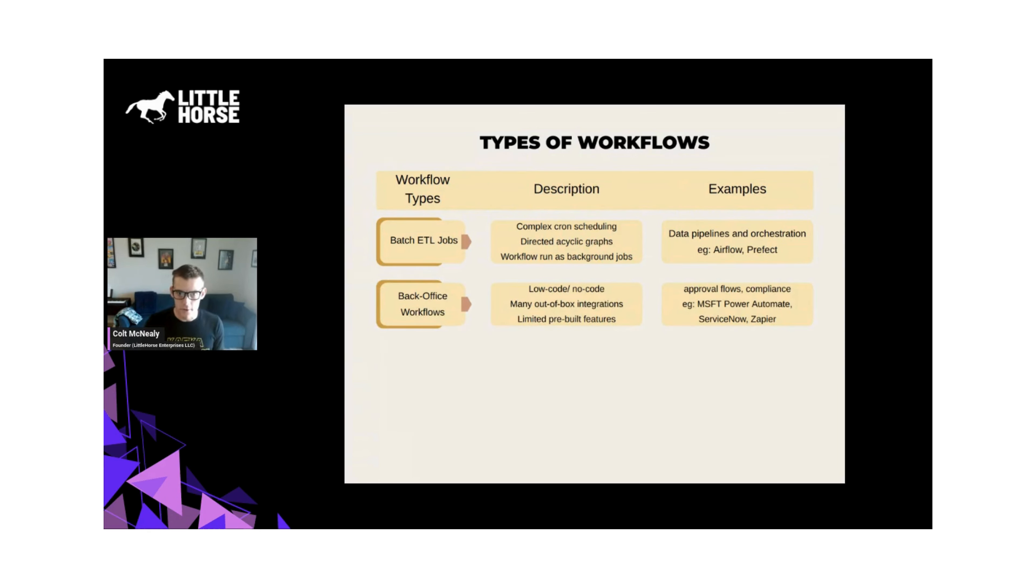Another space is back office workflows. A lot of the times the users of these systems are internal business managers, not necessarily engineers. And the systems come with plenty of low code integrations out of the box. And they're very good for certain types of internal workflows like compliance flows, approval flows, and even some customer support. And some examples would be ServiceNow, Zapier, Microsoft Power Automate, Salesforce has some workflow capabilities, Process Street is another example.